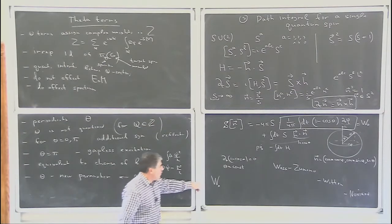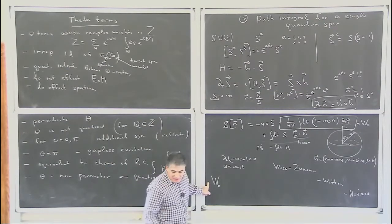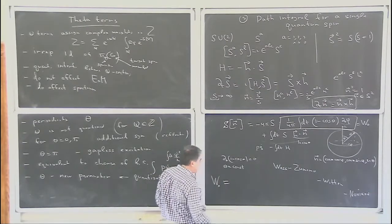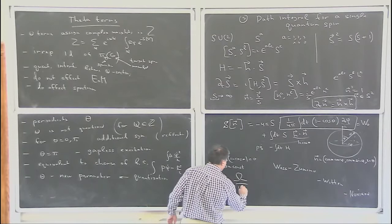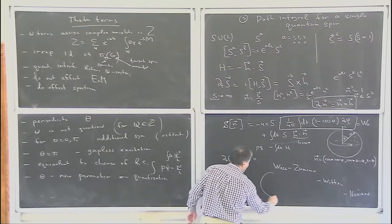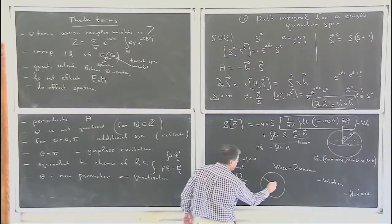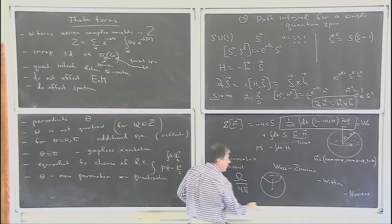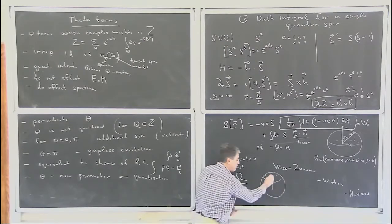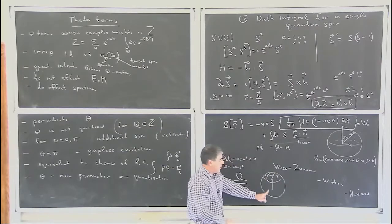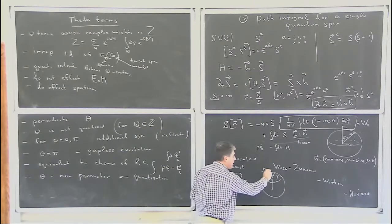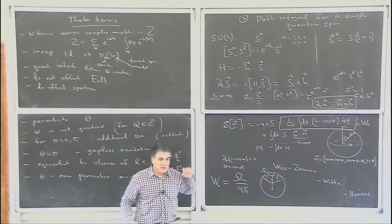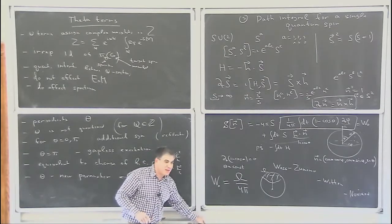The exercise for the five-minute break is to show that W_0 equals omega divided by 4 pi, where omega is the solid angle swept by the unit vector N during its evolution. If you take a closed trajectory of N, omega divided by 4 pi is precisely this W_0. We'll discuss this after the break.